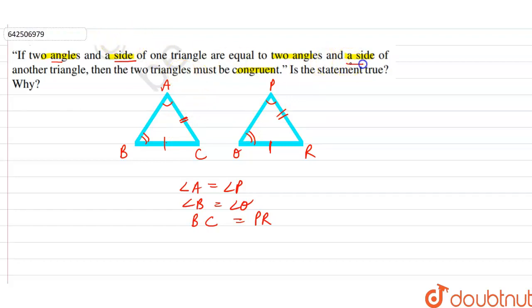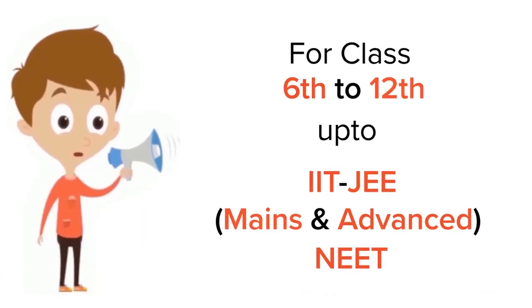Therefore, we can say that the two triangles can be congruent, but in this case it is not specified that the corresponding sides are equal or not. Right? Therefore, we can say that this statement is not true. Right, this statement, the given statement, is false.